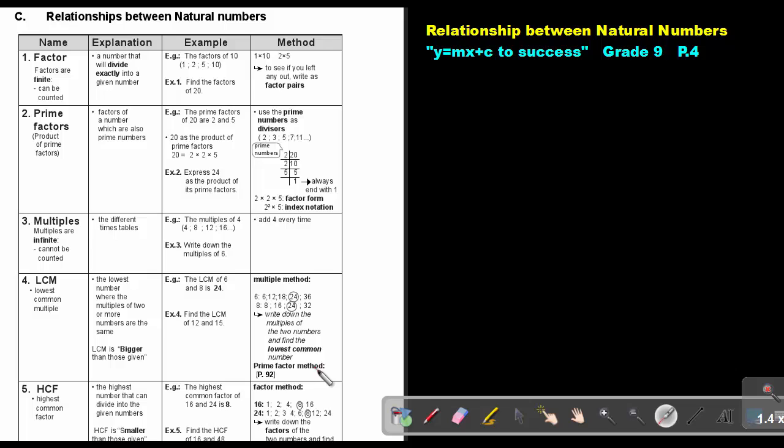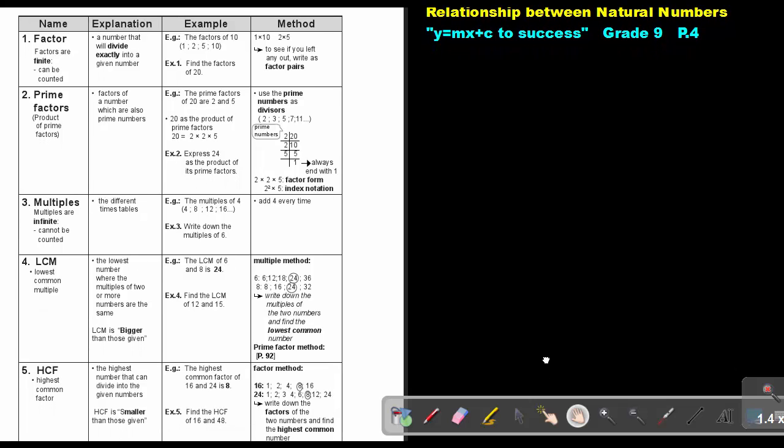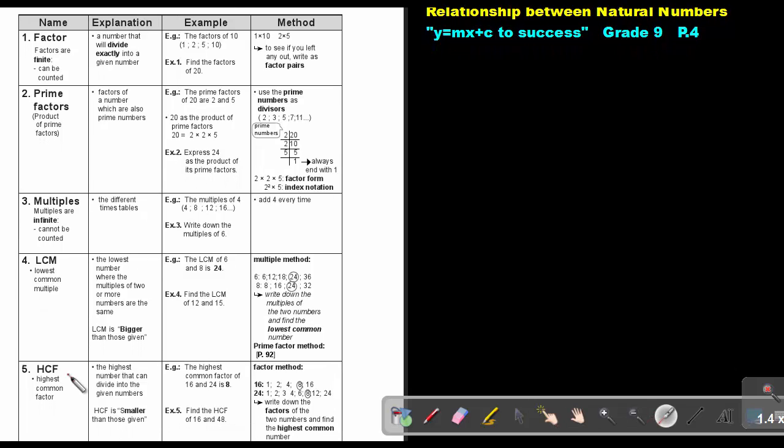We will look at the other method, the prime factor method, when we come to page 92. And then the highest common factor, the highest number that can divide into the given number. So if I say the highest common factor of 16 and 24, now make use of factors.